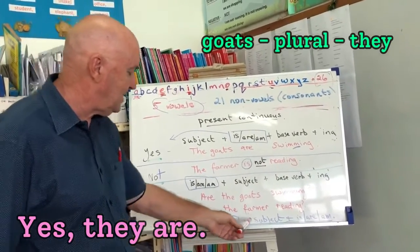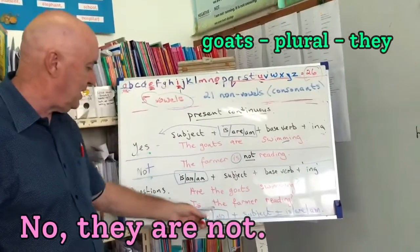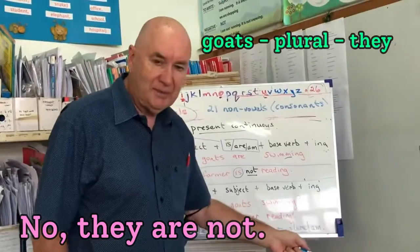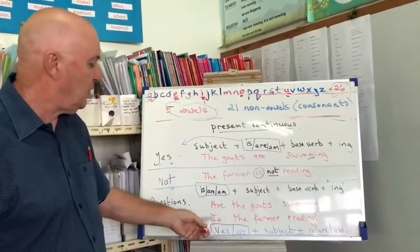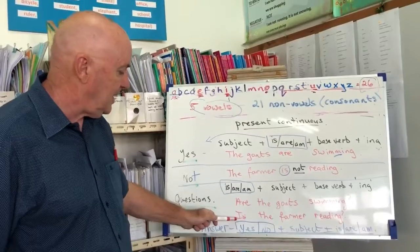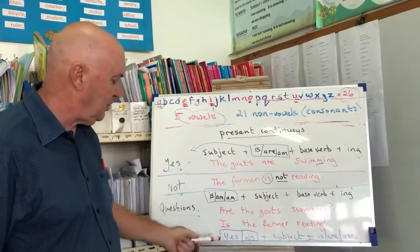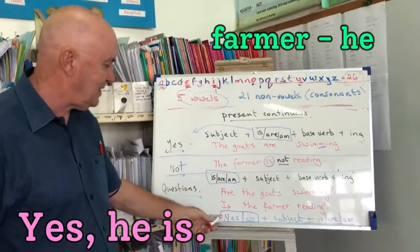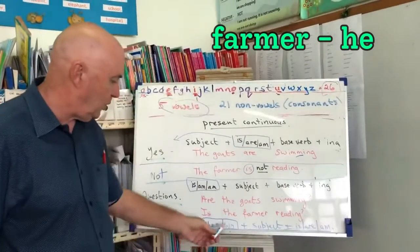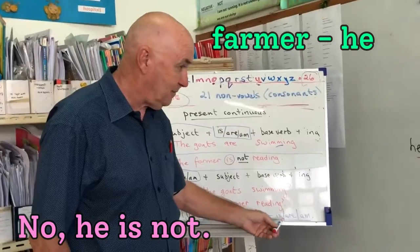We would say yes, they are. Or we would say no, they are not. If the question is: is the farmer reading? The answer will include is and the farmer. So we would say yes, he is — or no, he, the farmer, is not.